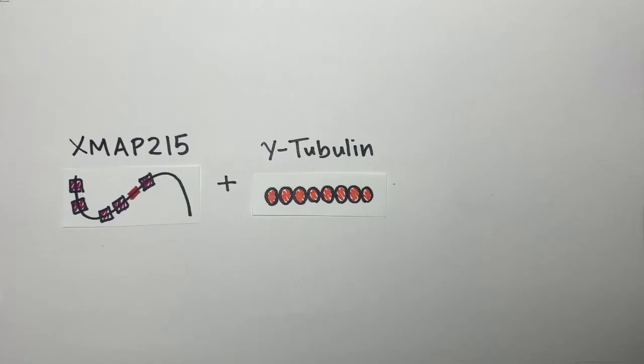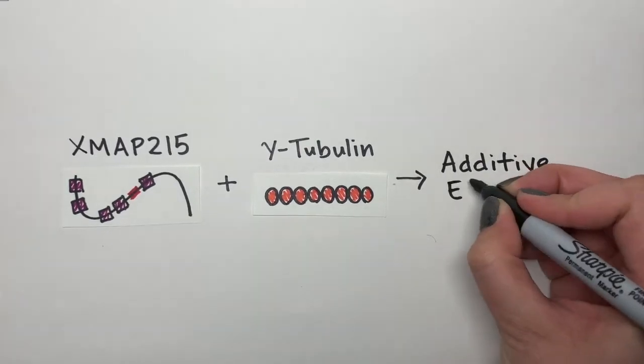We also found that XMAP215 and gamma tubulin work together to promote nucleation, and that their combined effect is additive.